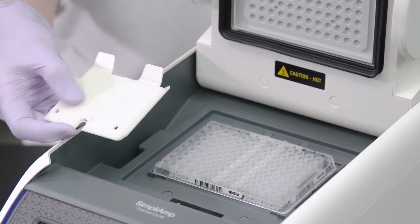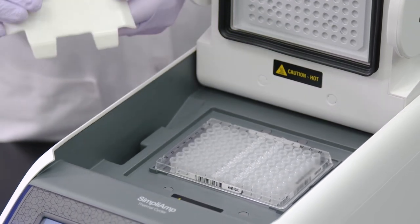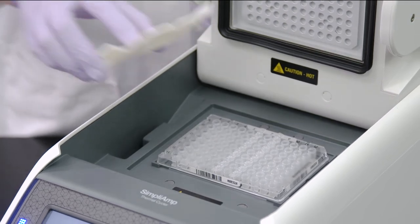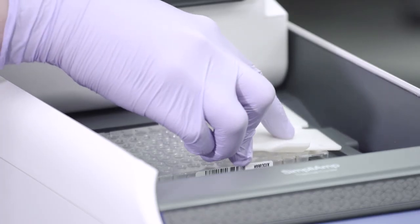To release the plate from the block, insert the two hook protrusions into the short side of the PCR plate and lift to remove the plate from the sample block.